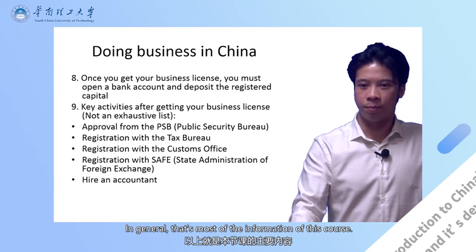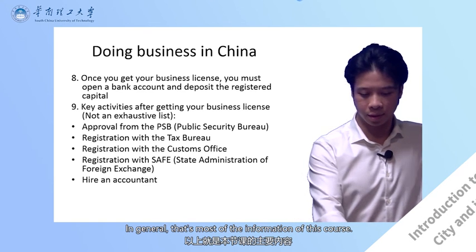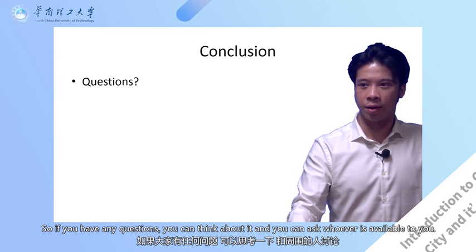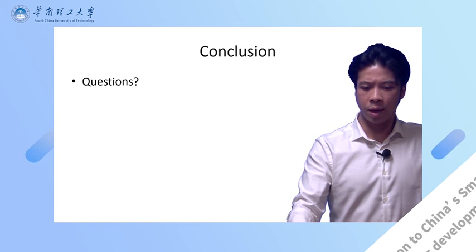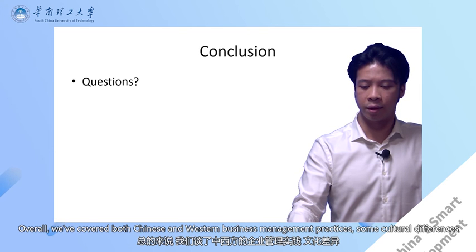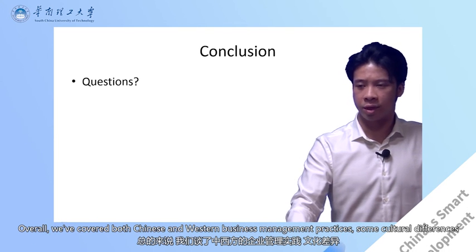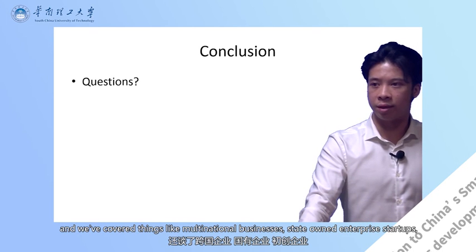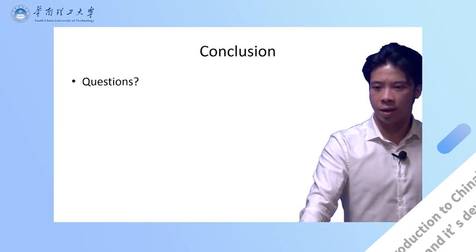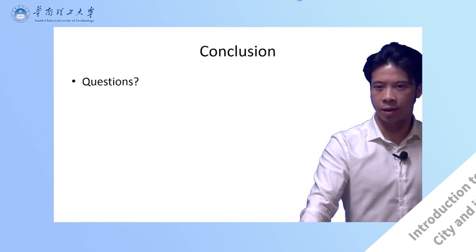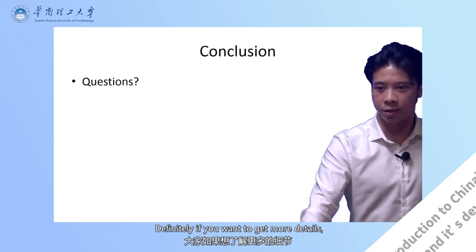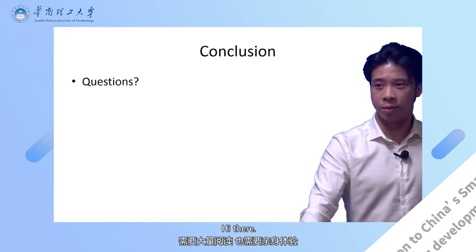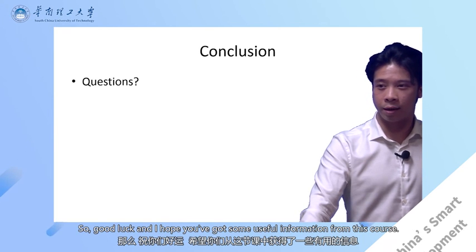In general, that's most of the information of this course. If you have any questions, you can think about it and ask whoever's available to you. Overall, we've covered both Chinese and Western business management practices, some cultural differences, and we've covered things like multinational businesses, state-owned enterprise startups, doing business in China, and private businesses in China. It's all been very brief — definitely if you want to get more details, you need to do a lot more reading and experience more as well. Good luck, and I hope you got some useful information from this course. Thank you.